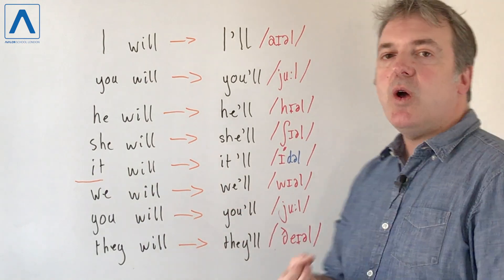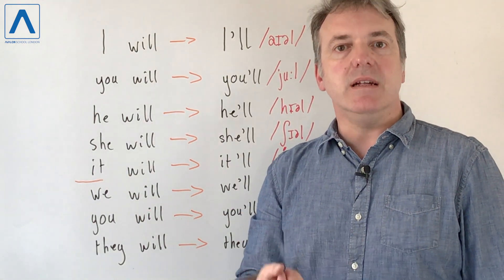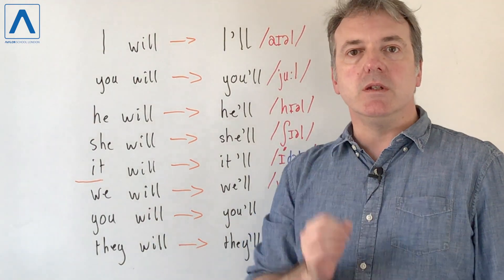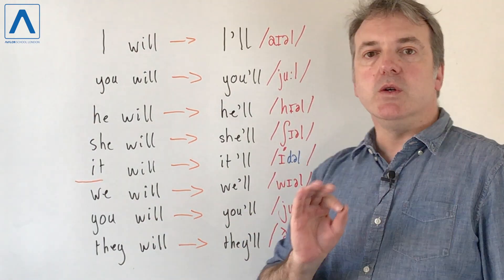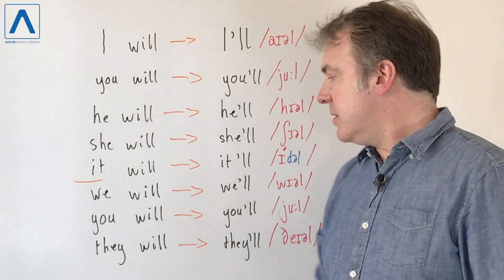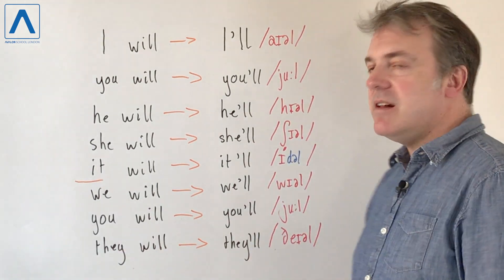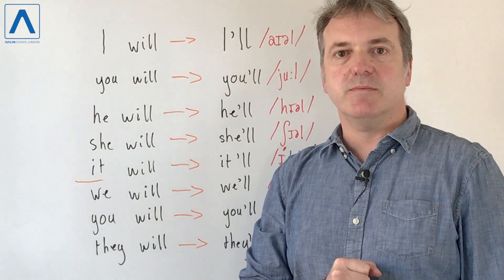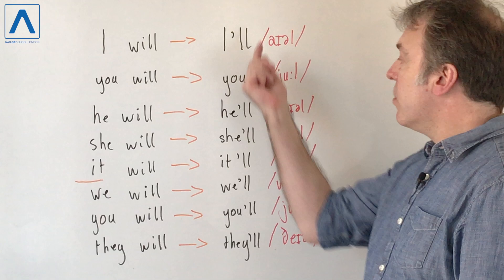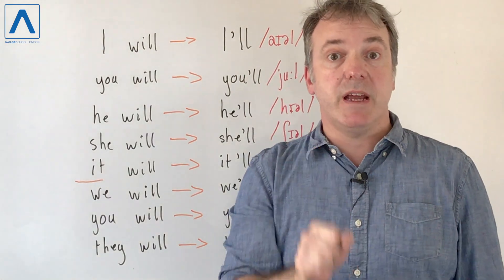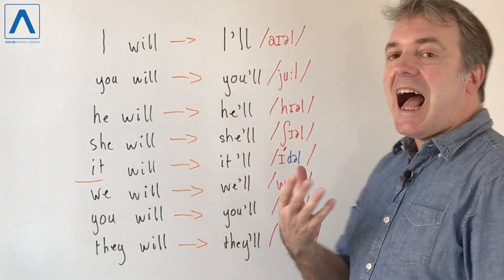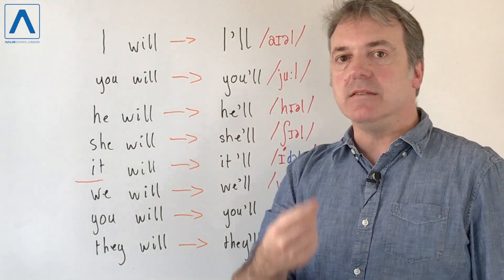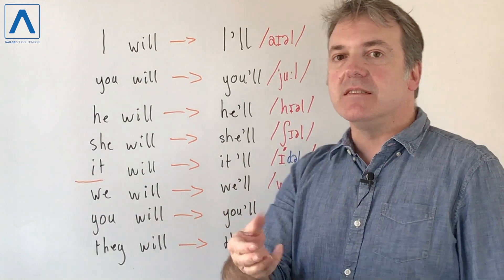They will becomes they'll. Okay, so let's go through all of them together and then we'll put a main verb with it. I'll, you'll, he'll, she'll, it'll, we'll, you'll, they'll.